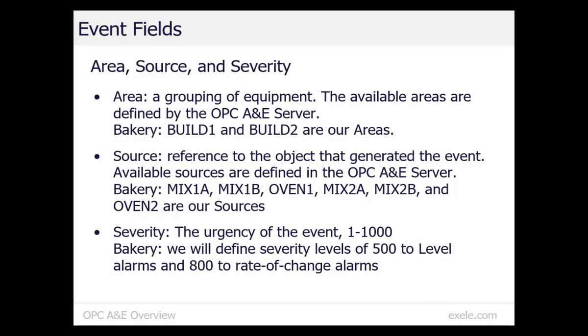An area is a grouping of equipment, and the available areas are defined by the OPC A&E server. In our bakery example, building 1 and building 2 are areas. A source is a reference to the object that generated the event — a source could be a process tag, a device, or a subsystem. The available sources are defined in the OPC A&E server. In our bakery example, the mixers and ovens are sources.